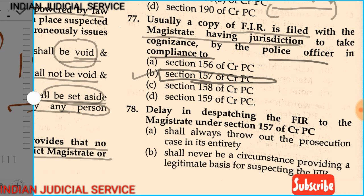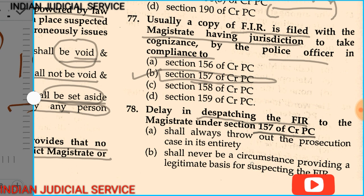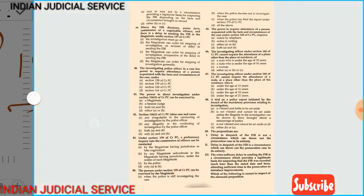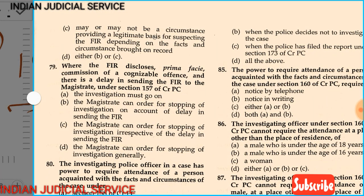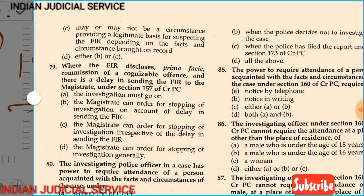Question 78: The delay in dispatching the FIR to the magistrate under section 157 of CRPC — shall it always throw out the prosecution case in its entirety, shall it never be a circumstance providing a legitimate basis for suspecting the FIR, or may or may not be a circumstance depending on the facts and circumstances brought on record? The answer is option C — may or may not be a circumstance providing a legitimate basis for suspecting FIR, depending on the facts and circumstances brought on record.